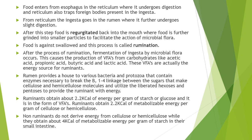Ruminants obtain about 2.2 kilocalories of energy per gram of starch or glucose, and this energy is in the form of volatile fatty acids. Similarly, ruminants also obtain about 2.2 kilocalories of metabolizable energy per gram of cellulose or hemicellulose digested. So fermentation of both cellulose, hemicellulose, or starches produces around 2.2 kilocalories of metabolizable energy per gram of substance fermented by the microbial flora of the rumen.